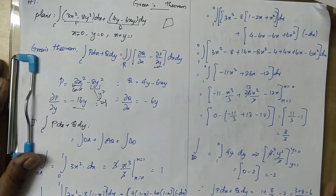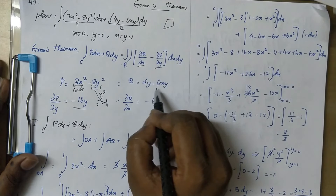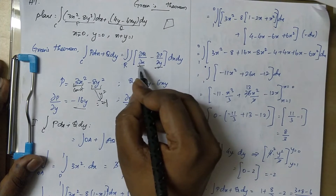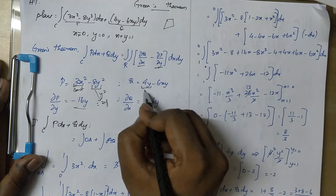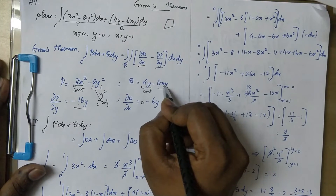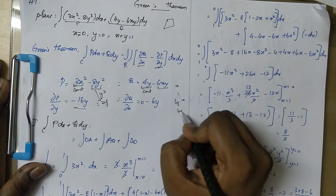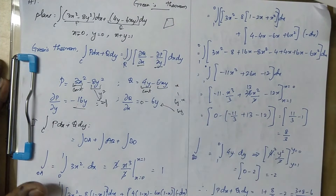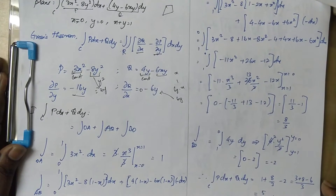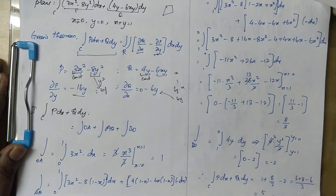Then dou Q by dou x — partially differentiate Q with respect to x. This term is constant, so the x term differentiates to 1. So 6y into x differentiates to 6y, giving dou Q by dou x equal to 6y. Now we apply this to the closed integral.